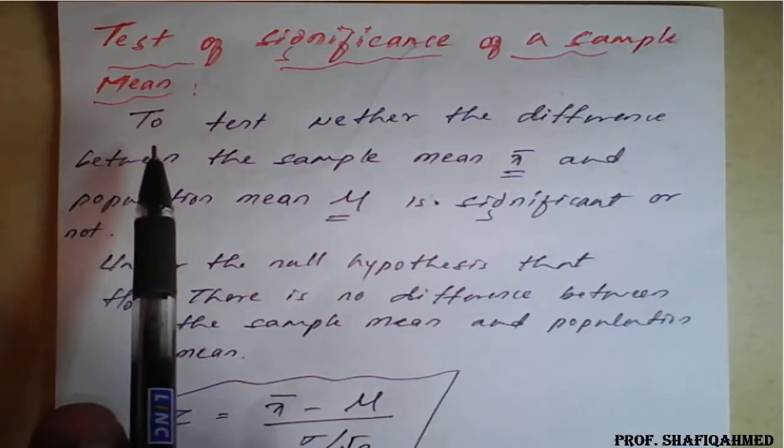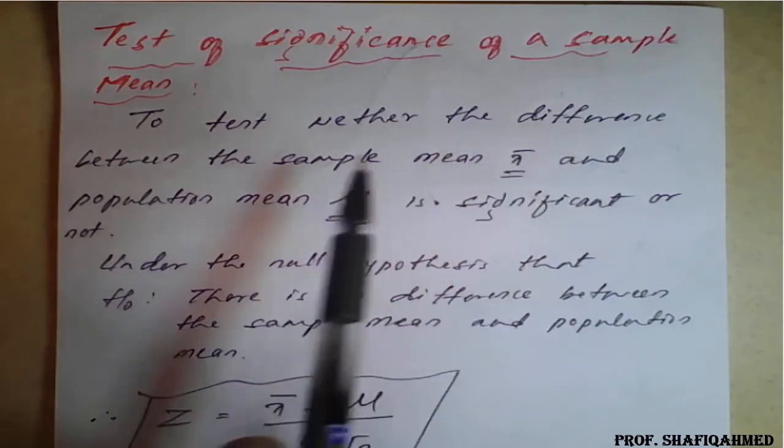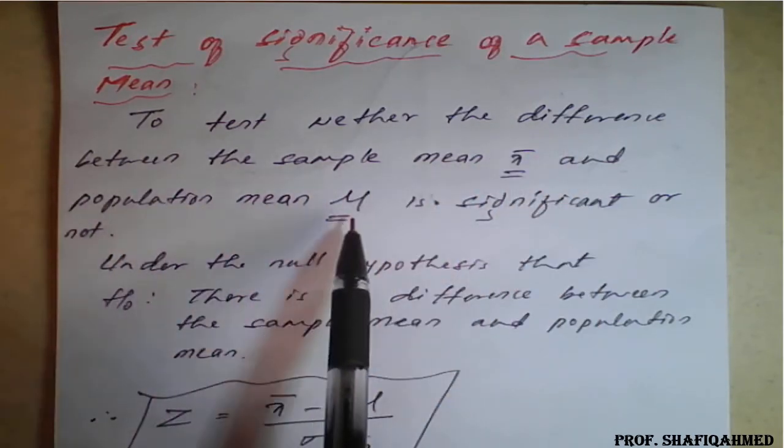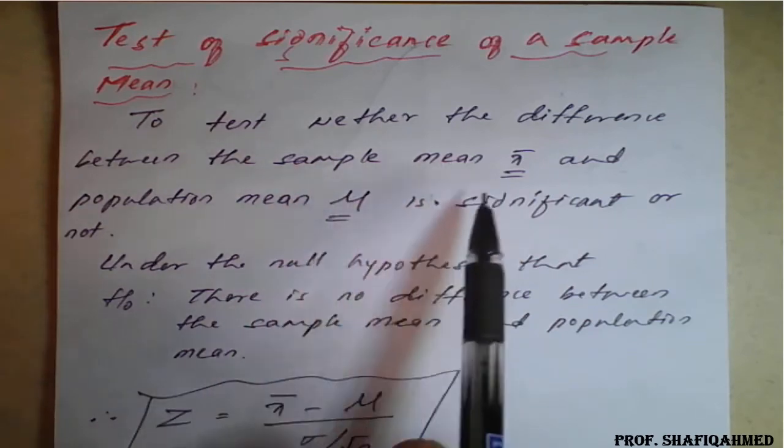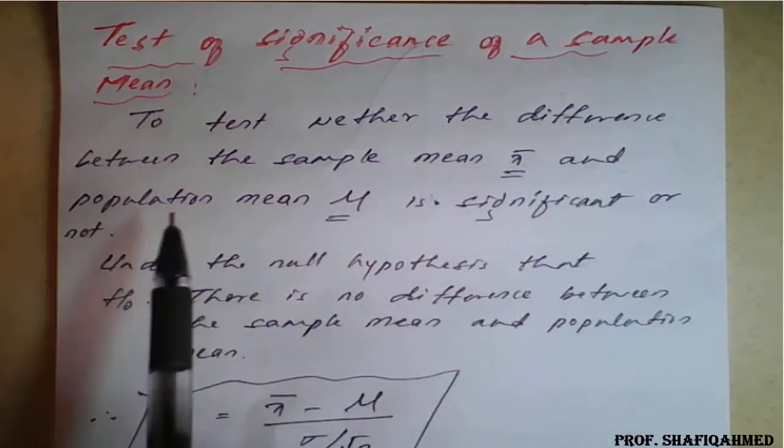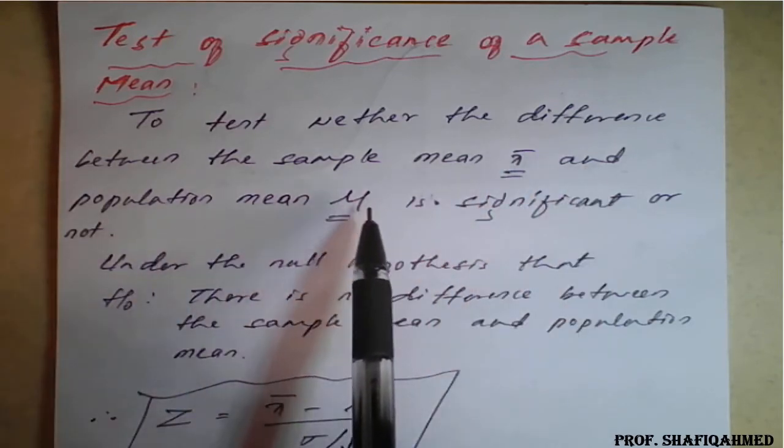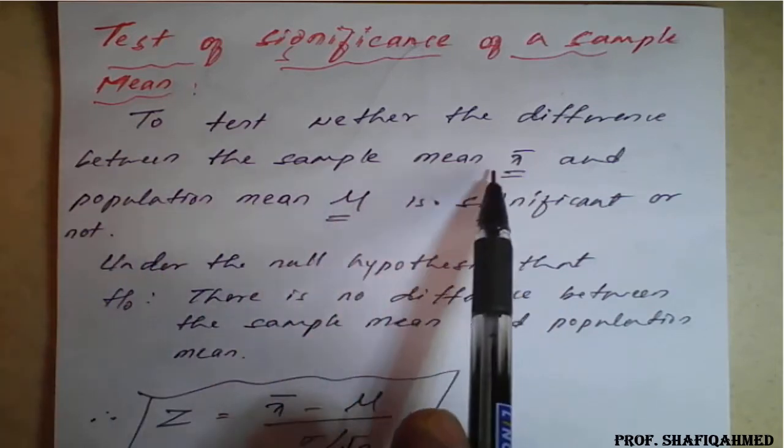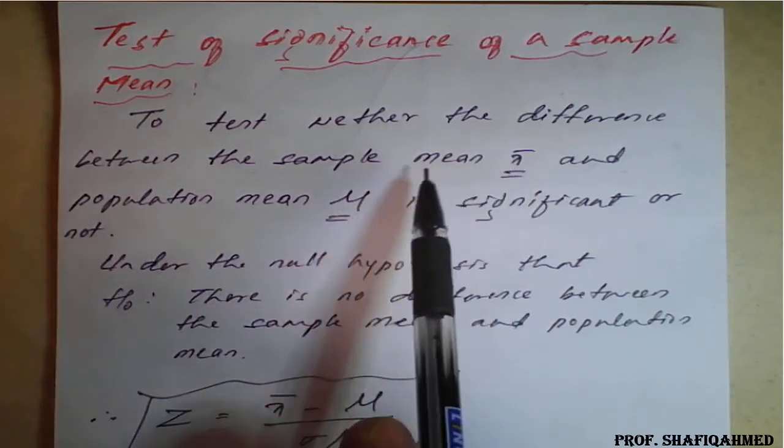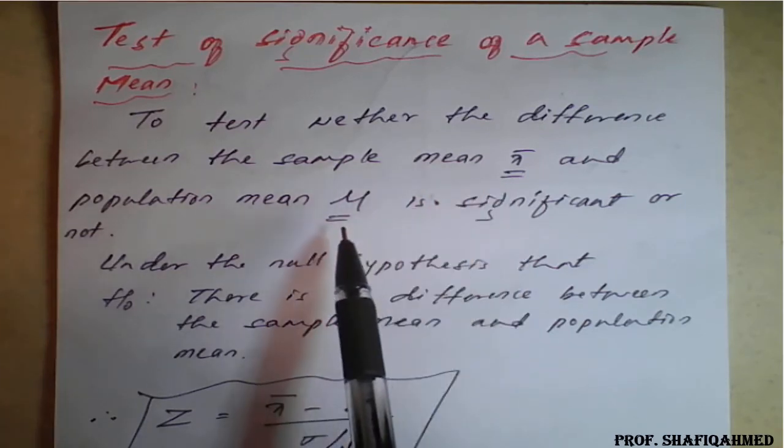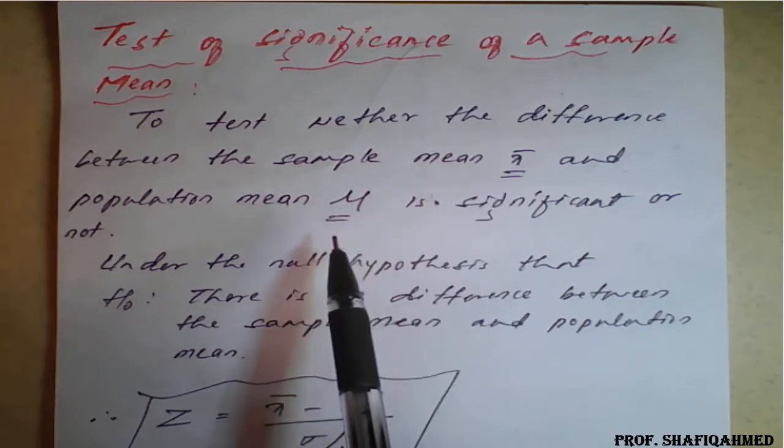Here, to test whether the difference between sample mean x̄ and population mean μ is significant or not. You can consider the sample mean symbolically called as small x̄ and population mean stand for μ. We check whether both x̄ and sample mean what we have taken from the population is same with the population mean or not.